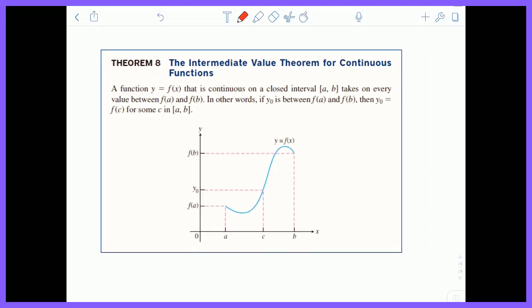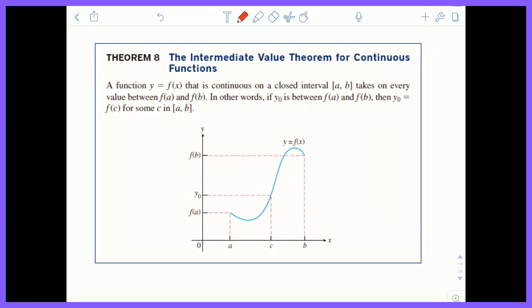The intermediate value theorem for a continuous function says: a function y equals f(x) that's continuous on a closed interval—to even use this theorem we have to be a continuous function on the closed interval [a, b].